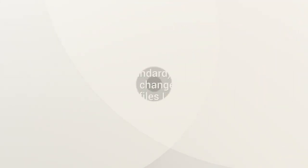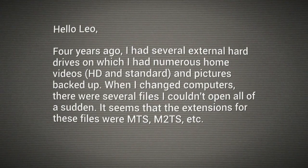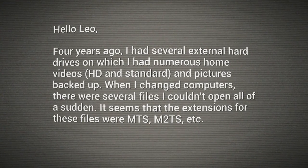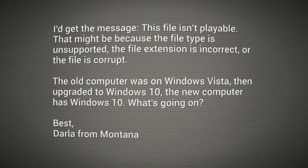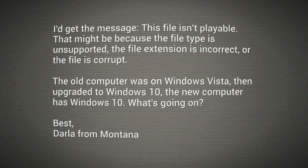She writes: four years ago, I had several external hard drives in which I had numerous home videos — HD and standard — and pictures backed up. When I changed computers, there were several files I couldn't open all of a sudden. The extensions for these files were MTS, M2TS, and so forth. She'd get the message: this file isn't playable — that might be because the file type is unsupported, the file extension is incorrect, or the file is corrupt. The old computer was on Windows Vista, then upgraded to Windows 10. The new computer is Windows 10. What's going on?